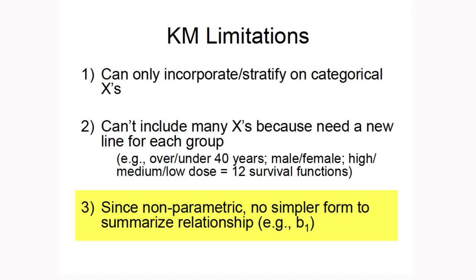With regression, we have a slope, beta 1, so we can boil down all observations to this one number, which is meant to represent the entire line. But with Kaplan-Meier, there is no way to simplify the relationship — we need the full table or graph.